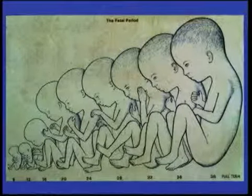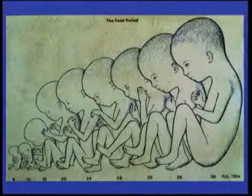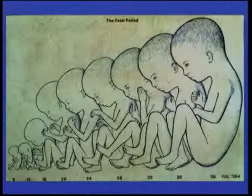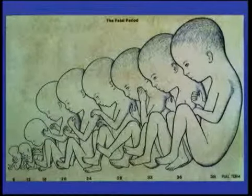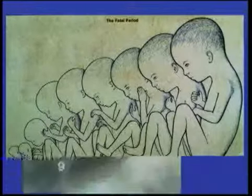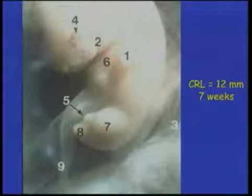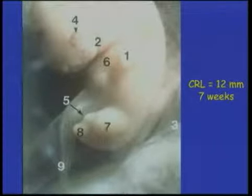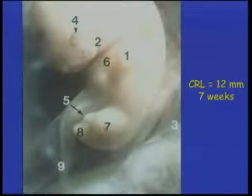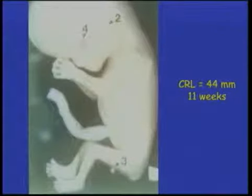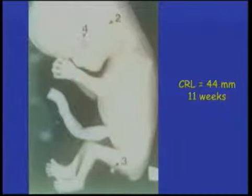If you look at the fetus and see how small it is on a scale of nine weeks, then moving up to 38 weeks and all the way to term, you can see how the size and formation changes over time. At seven weeks, when the crown rump length is 12 millimeters, we barely have limb buds, a little ear bud, and the head and neck are quite large in comparison to the rest of the body.